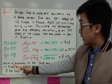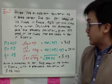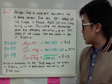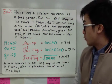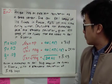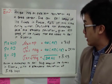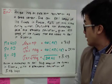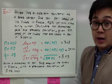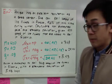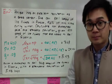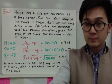In conclusion, Anissa is expected to sell 368 bags of ice cubes in Siberia with a standard deviation of 5.43 bags.